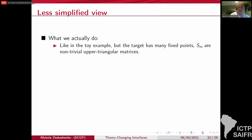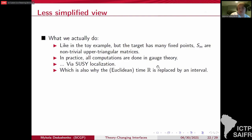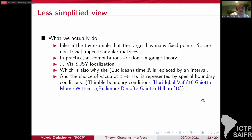Of course, this is all a simplification. In the toy example, we had only one vacuum, so nothing could really happen. In actual examples, the target space is more complicated. It has many fixed points and S_M are non-trivial upper or lower triangular matrices that describe transitions between them. And also all computations in gauge theory in practice because non-linear sigma models are complicated are done via localization.